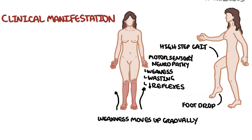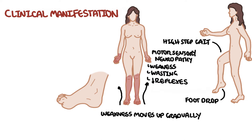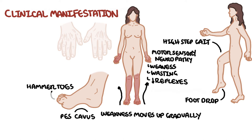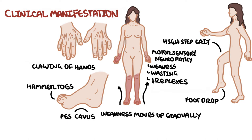As a result of progressive weakness and sensory loss, you get deformities of the skeleton. You get what's called pes cavus — basically a high arched foot — hammer toes, and clawing of the hands. These are usually seen in patients with long-standing disease due to weakness of the intrinsic muscles. Patients also get wasting of legs and distal thighs, which may give an inverted champagne bottle appearance.